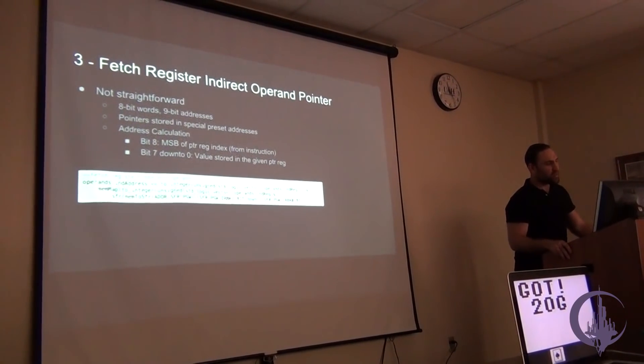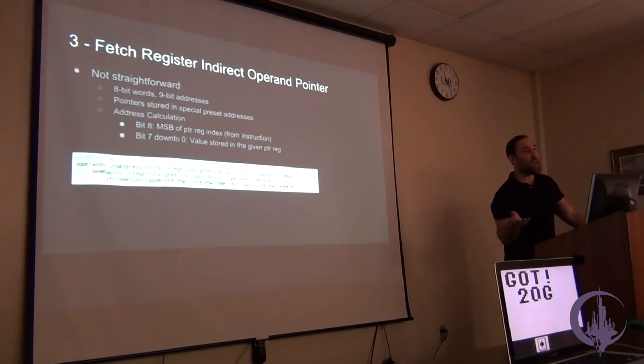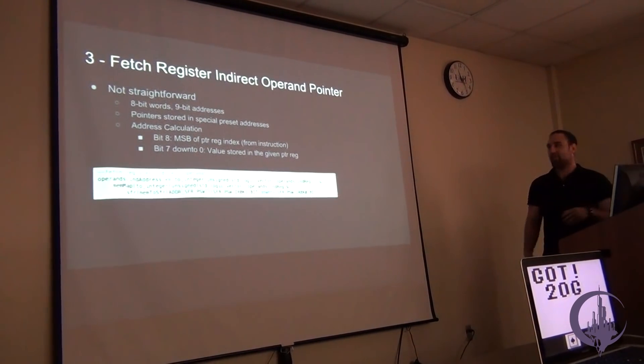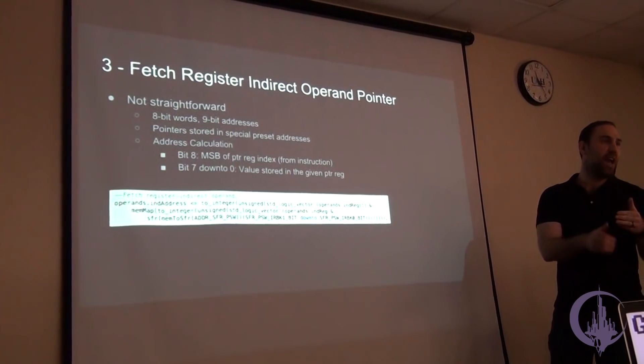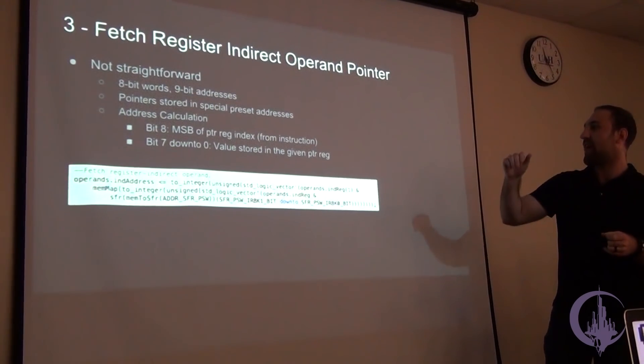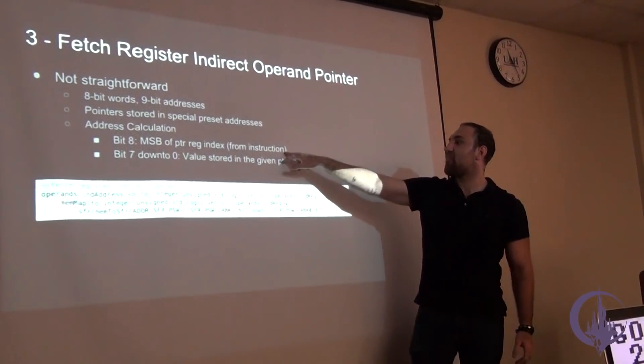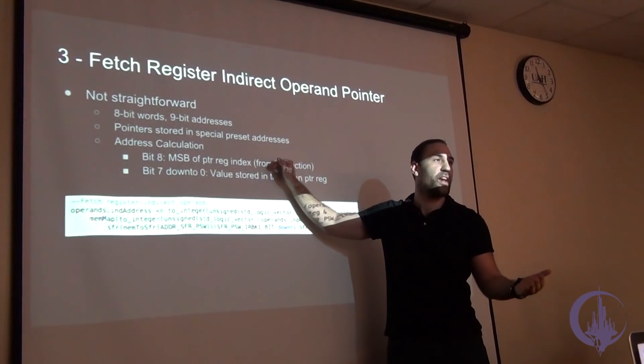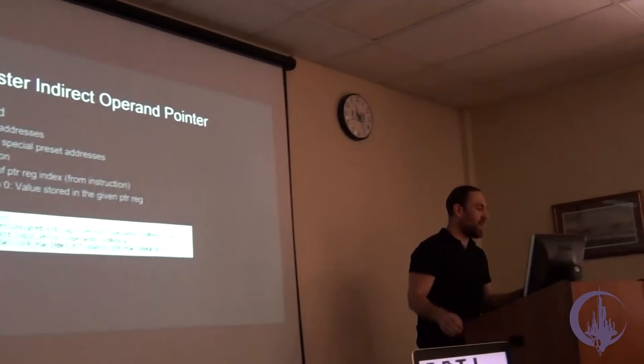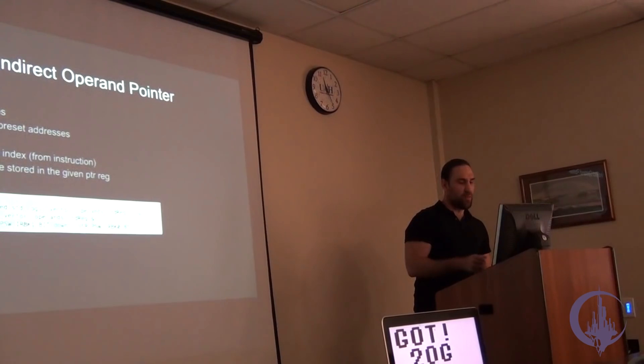So the register indirect operand is a massive pain in the butt, and this comes from the fact that you have an 8-bit architecture that a memory address is 9 bits. So how do you actually represent a pointer since it can't fit into one word on the processor? So the way it works is you are packing. There are special memory addresses which are hard-coded pointer addresses. You can only store pointers in one of four different addresses, and then in one of those four, you're only storing the first byte of the pointer in those special addresses, and then the second byte of the pointer, or the ninth bit, the ninth bit of the pointer comes from the instruction itself and which register you use. So it's kind of a pain, and that's the logic for doing it, for taking bits 0 to 7 from the memory address and then bit 8 from the instruction itself.